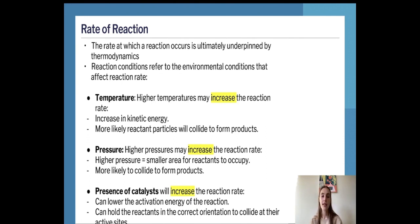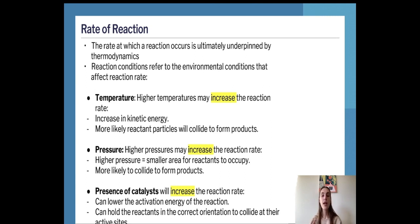Catalysts increase the reaction rate by either lowering the activation energy for the reaction — meaning less energy is required when molecules collide for a product to be produced — or by holding the reactants in the correct orientation so they collide at the active sites. Molecules can collide at or above the activation energy and still not form products if they haven't collided with the right orientation, so a catalyst holding them in the right orientation ensures that when they do collide at the activation energy, they will definitely form a product.